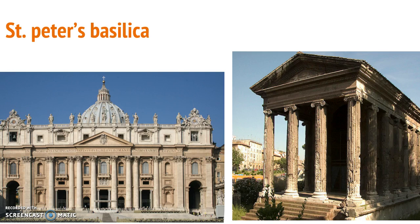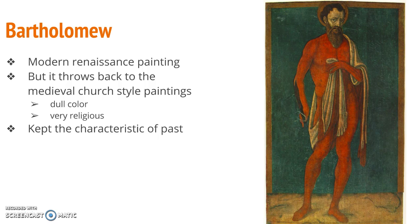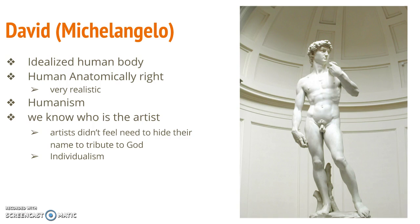Other things shown include Saint Bartholomew and modern Renaissance paintings. It kind of throws back to medieval church and painting styles — it kept the characteristics of the past with dull colors. Also, the statue of David by Michelangelo represents modern Renaissance. David's body was idealized — the idealized human body — and it was anatomically correct. We all know who made this statue, and it's one of the things that humanist artists did. They didn't feel the need to hide their name and attribute it to God, which reflects humanism. Both pieces of art are anatomically correct, which is another factor of the Renaissance period.